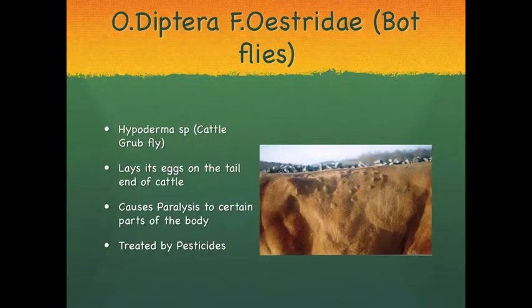The second order that will be discussed is order Diptera, family Oestridae, which resemble the commonly known bot flies. Hypoderma species are pests of cattle that are found in North America, Europe, Asia, and Africa. Hypoderma is a pest that uses the cattle as a nest for its eggs.